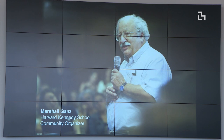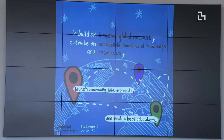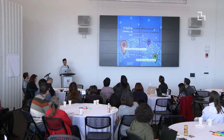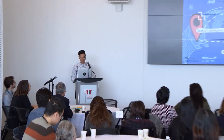I actually think that might be a really valuable exercise for this group to even think about — why are we here together, what is our shared purpose? This was done in collaboration with Harvard Kennedy School and Marshall Ganz, who's a legendary community organizer. Our shared purpose is: to fundamentally transform the life sciences and democratize biotechnology, to inspire creativity and improve lives by organizing life science change makers and bio enthusiasts to build an inclusive global network, cultivate an accessible commons of knowledge and resources, launch community labs and projects, and enable local educators.